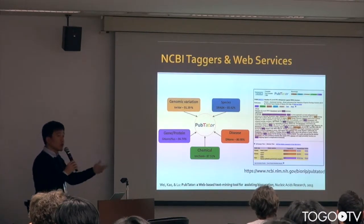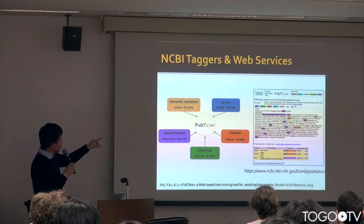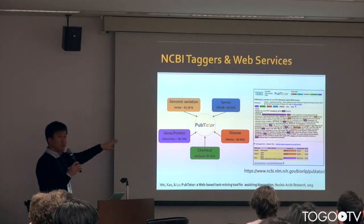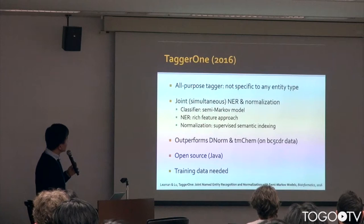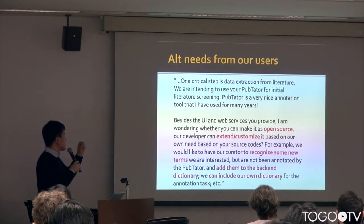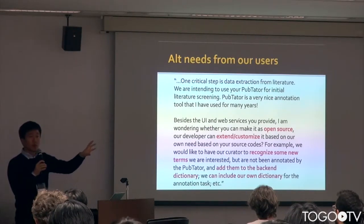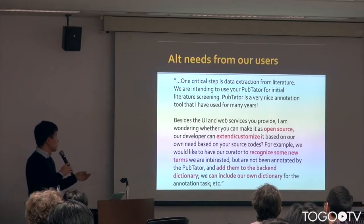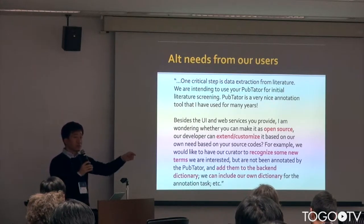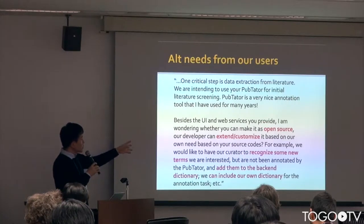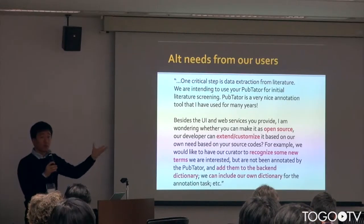The NCBI team provides a good tagging system called Pubtator. In that system they provide five different taggers for each bio concept. They are very good, but there is still a lot of need from users — they want to extend their own taggers using their own dictionaries, but the current Pubtator does not support those needs.